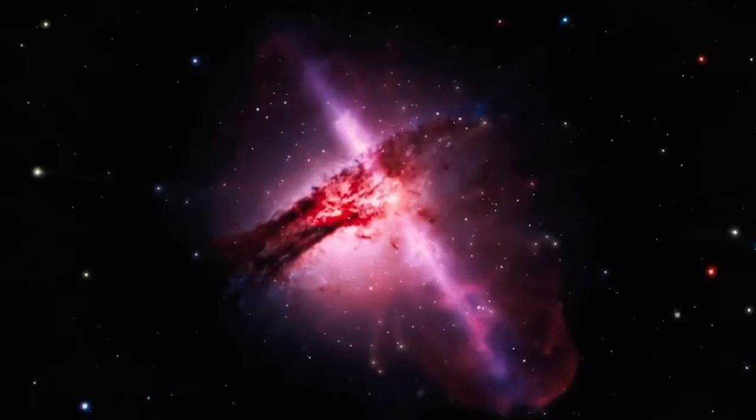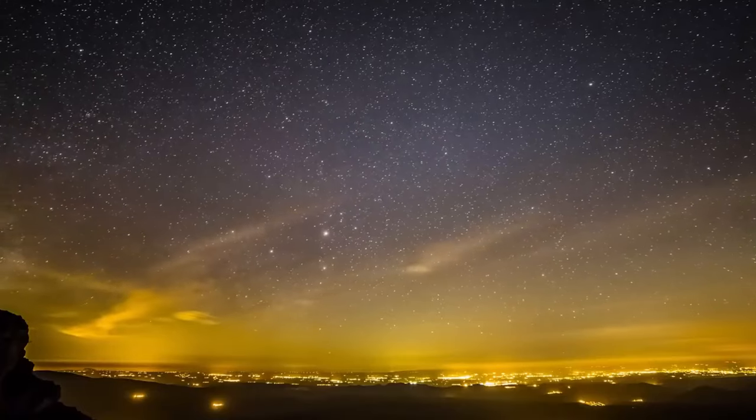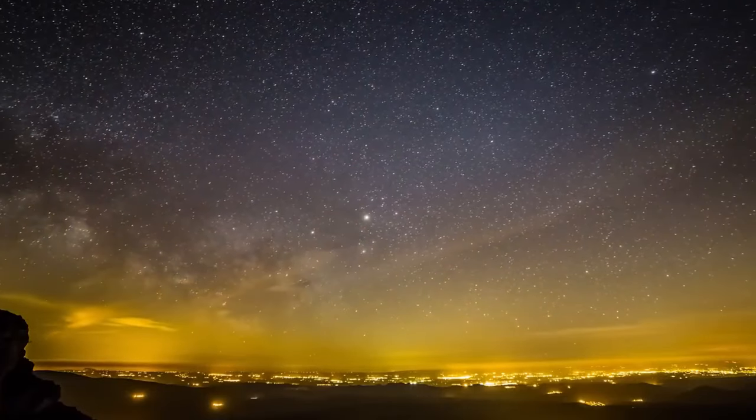Objects moving towards us, on the other hand, look blue because their motion compresses light rather than stretching it out. This elongating of light is called redshift, and it's one of the ways astronomers date things in the universe.